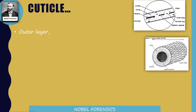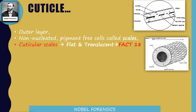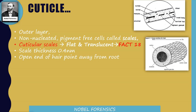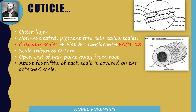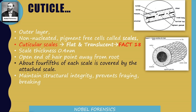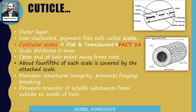The cuticle is the outer layer and it contains non-nucleated and pigment-free cells called scales — these are cuticular scales. Cuticular scales are flat and translucent; this was a previous exam question from 2018. The scale thickness is 0.4 nanometers. The cuticular scales have a sharp end that points towards the tip of the hair, away from the root. About four-fifths of each scale is covered by the attached scale. The cuticle maintains structural integrity, prevents splitting of hair, and prevents transfer of soluble substances from inside to outside.